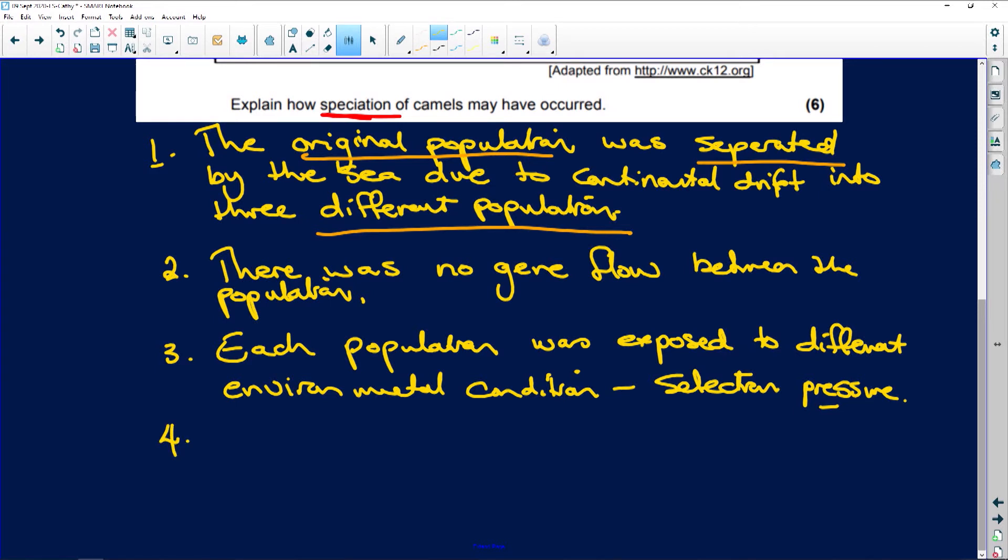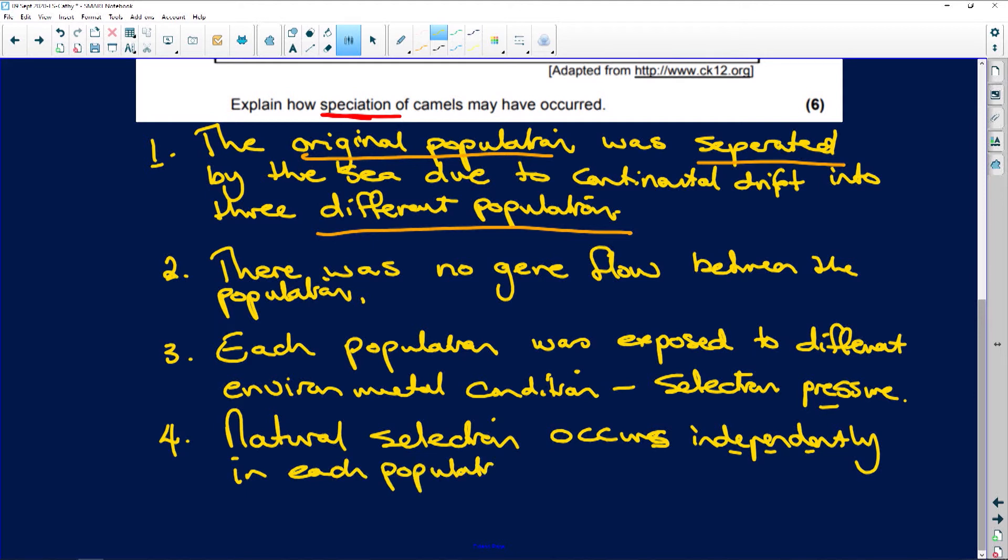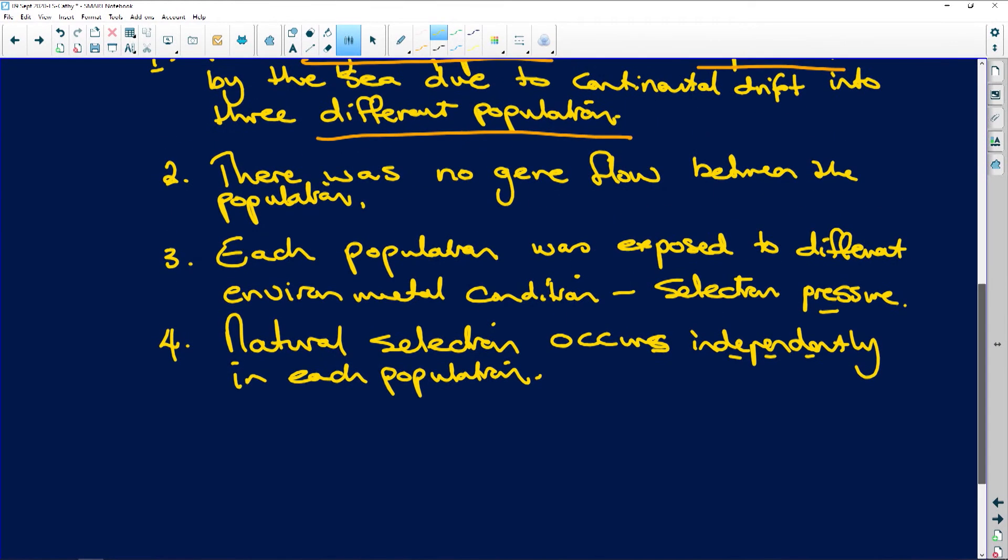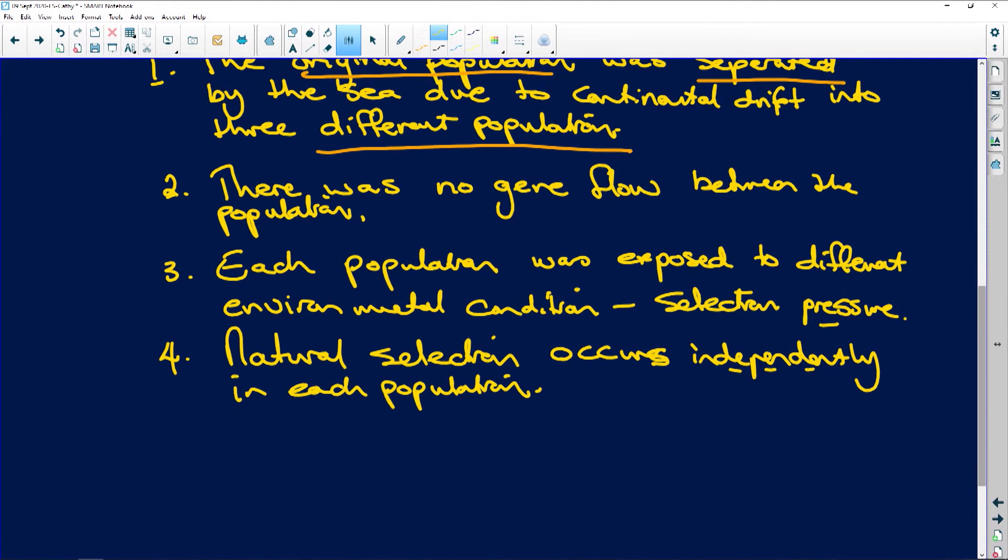Number four: Natural selection occurs independently in each population. I was thinking of all the E's in independently and I write an E at the end of occurs. Independently in each population. So natural selection occurs independently in each population.